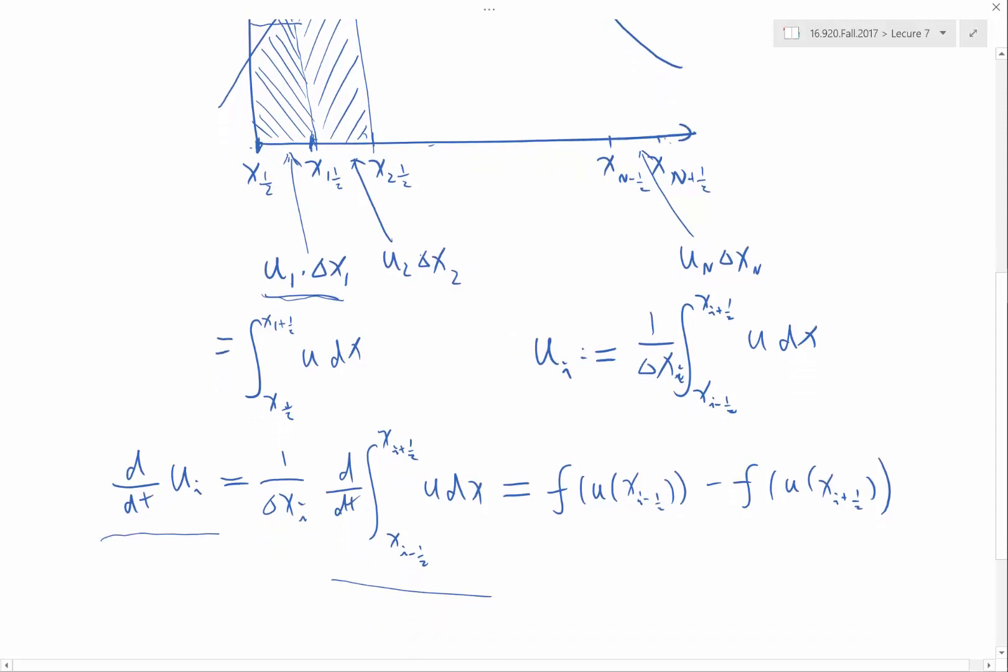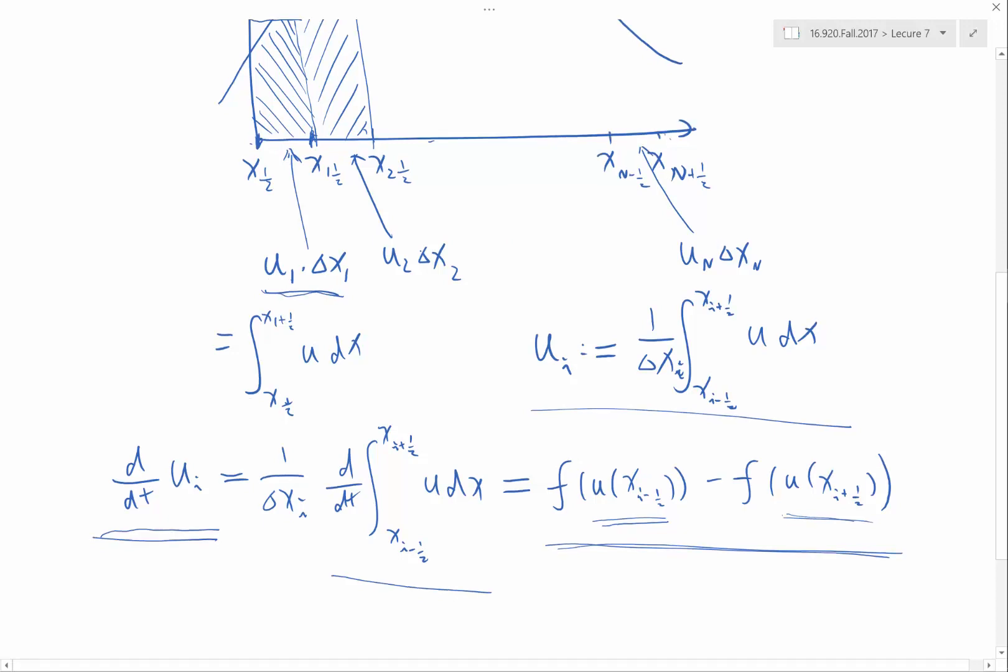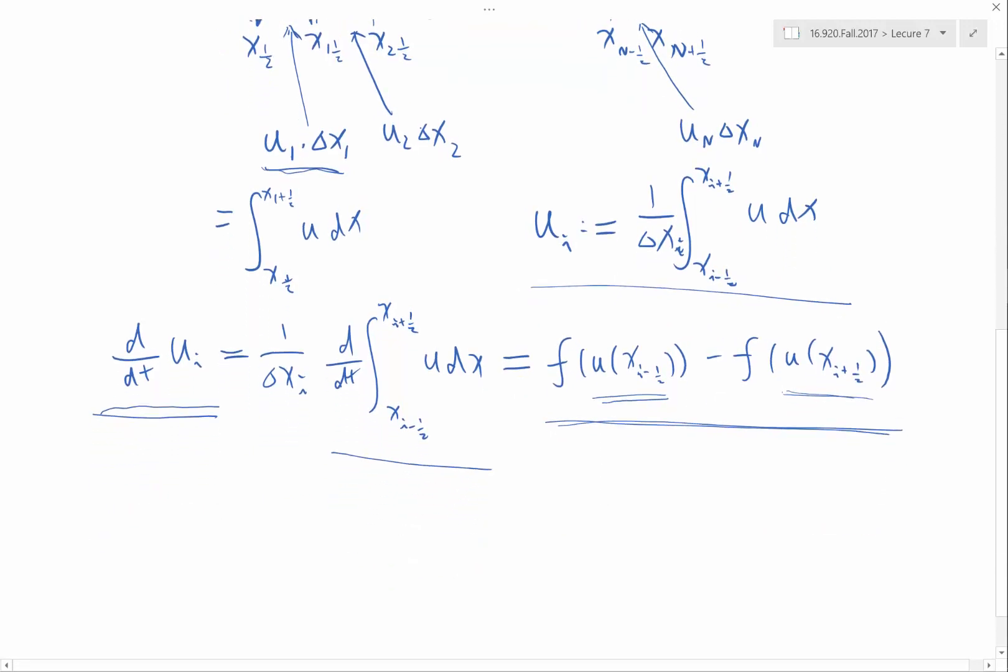So the time derivative of the quantity I store on the computer can be expressed algebraically. The only difficulty I have here is that I don't know the values of u at xi minus half. I also don't know the values of u at xi plus half. I only have the cell average values, and here now I require the point values.